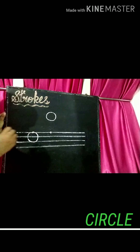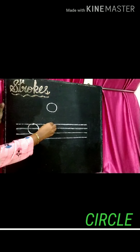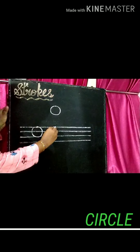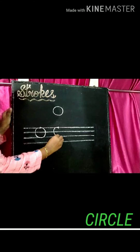Once again, start circle from the dot. Draw open curve, go up and join in the same dot.